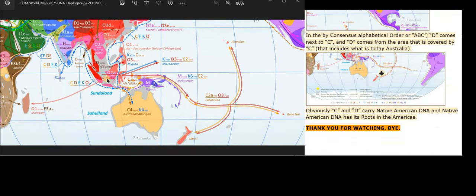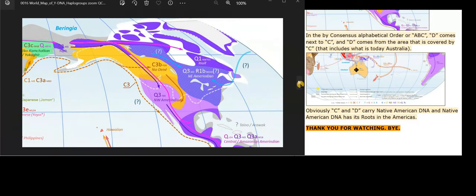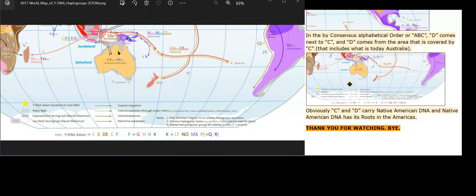In the by consensus alphabetical order or ABC, D comes next to C, and D comes from the area that is covered by C, that includes what is today Australia. Obviously C and D carry Native American DNA and Native American DNA has its roots in the Americas. Thank you for watching.